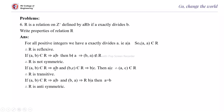For transitivity: if (A, B) belongs to R, A divides B, and (B, C) belongs to R, B divides C, then A divides C. Therefore, R is transitive. For anti-symmetry: if (A, B) belongs to R, A divides B, and (B, A) belongs to R, B divides A. When A divides B and B divides A, it is obvious that A equals B. Therefore, R is anti-symmetric.